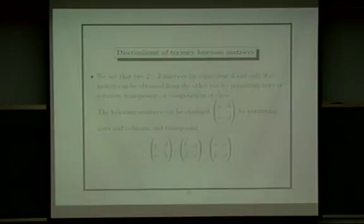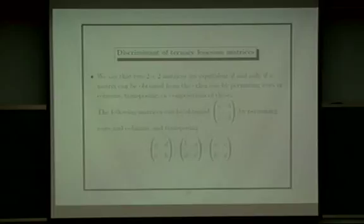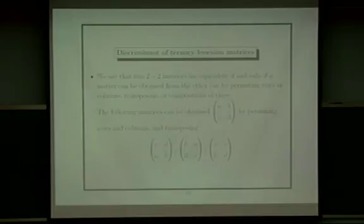So the first thing we have to do is find the 2-by-2 minors which are not permitted. But in the ternary case, there are so many cases. Instead of that, we find some permitting 2-by-2 minors. We say two 2-by-2 matrices are equivalent if a matrix can be obtained from the other one by permutation of rows and columns, transposition, or a composition of these.